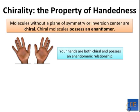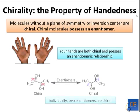Each one individually is chiral, in that it possesses an enantiomer, and they possess an enantiomeric relationship. In fact, another word for chirality that means the exact same thing is handedness. Chirality is just the property of handedness.